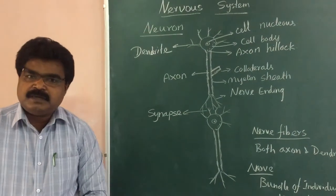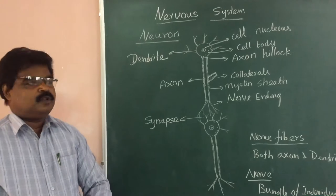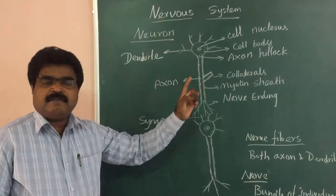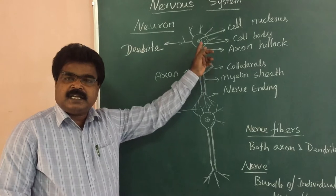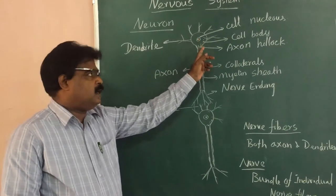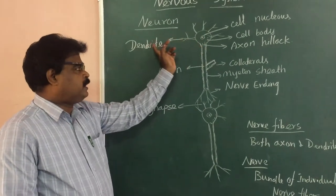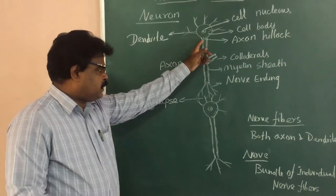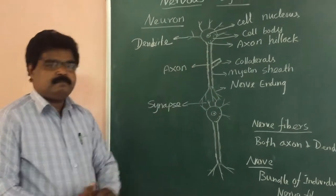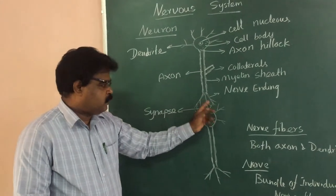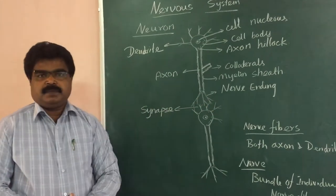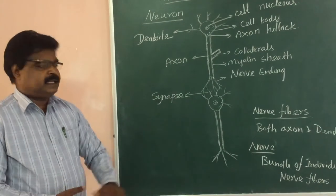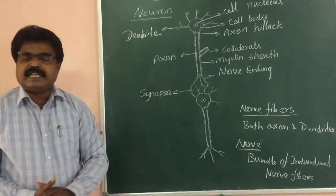The basic unit of the nervous system is the neuron. A neuron consists of a single cell with the cell body; the center consists of a nucleus and dendrites, where the input is given into the neuron. The long transmitting fiber is called the axon, and it ends with nerve ending fibers. In this diagram, two neurons are shown and their interconnection is called a synapse.